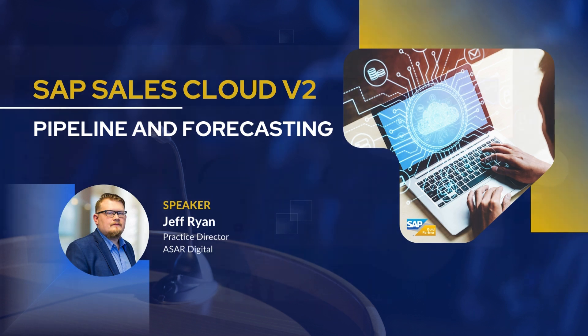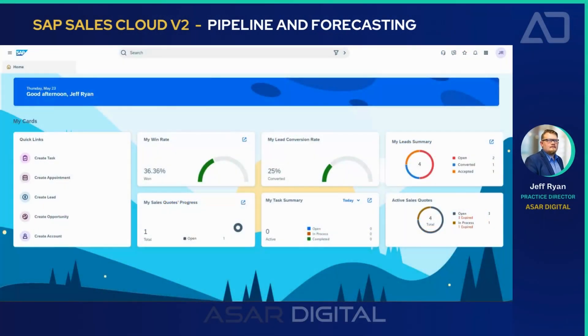Hello, today I'd like to discuss the Pipeline Manager, Pipeline Flow, and Forecast Tracker. Let's dive into the Pipeline Manager in SAP Sales Cloud Version 2. This tool is a dynamic tool that gives the sales team a comprehensive view of their sales pipeline, enabling better management and strategic decision making. With real-time insights and drag-and-drop functionality, you can quickly adjust and optimize your sales pipeline to align with changing business conditions. The Pipeline Manager ensures full visibility into every opportunity, helping you prioritize effectively and drive your sales process forward efficiently.